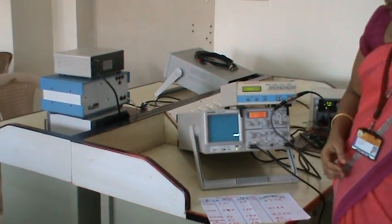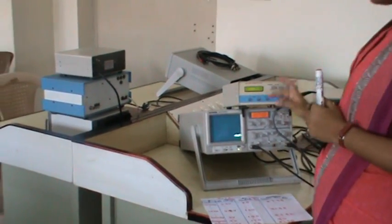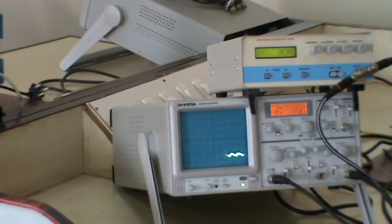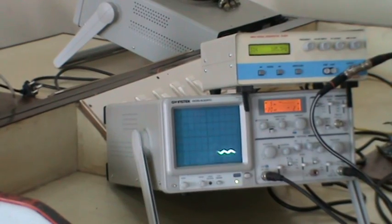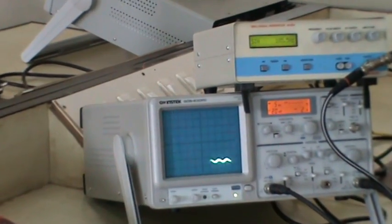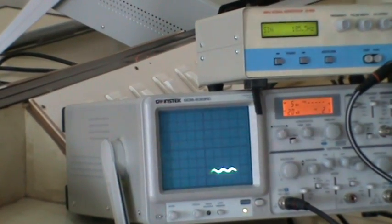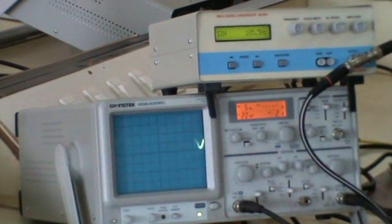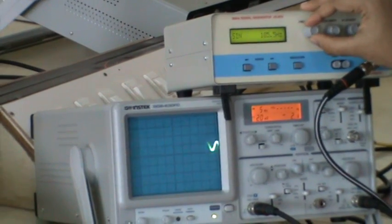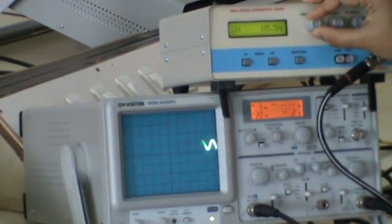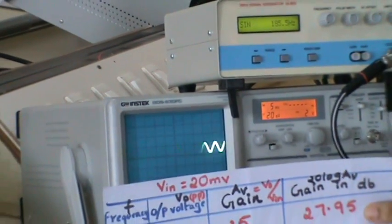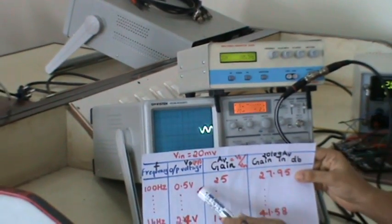By varying the frequency here from 100 hertz to around 3 megahertz for an input voltage of around 20 millivolt which is a sinusoidal voltage, the graph is plotted. Initially input is kept at 20 millivolt and the input frequency is 100 hertz. By varying the input frequency from 100 hertz we can see the output voltage is 0.5 volt. You can see it here.